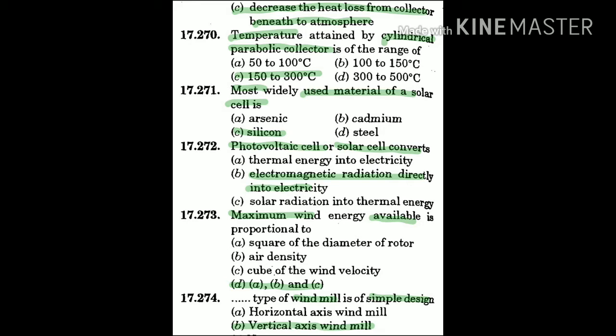Question 273: Maximum wind energy available is proportional to — the answer is D (all of A, B, and C): A) square of the diameter of the rotor, B) air density, C) cube of the wind velocity.